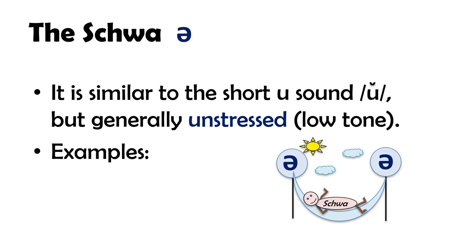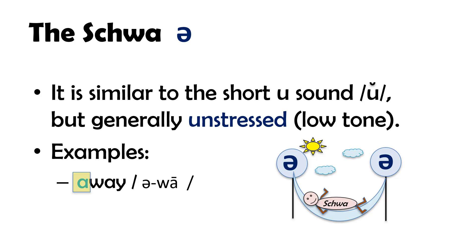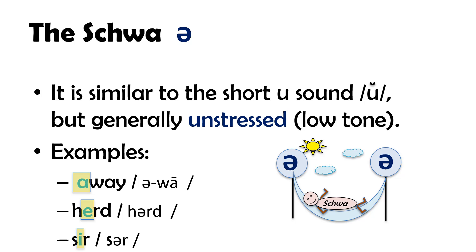Examples: The vowel A in 'away' makes the schwa sound. The vowel E in the word 'heard' makes the schwa sound. The vowel E in the word 'sir' makes the schwa sound.